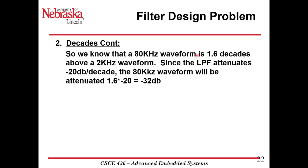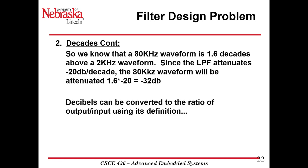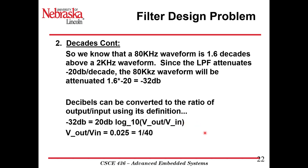Knowing that 80 kHz is 1.6 decades above 2 kHz, and a low-pass filter attenuates at minus 20 dB per decade, we multiply 1.6 decades by minus 20 dB per decade to get minus 32 dB. Converting this to a voltage ratio using the decibel definition, minus 32 dB equals 20 log base 10 of V_out over V_in, giving us V_out over V_in equal to 1 over 40, which is 2 over 80, or 0.025.